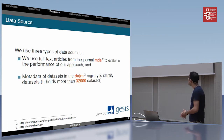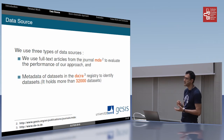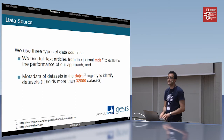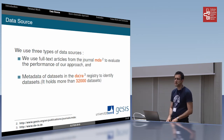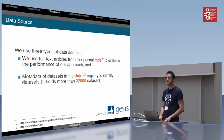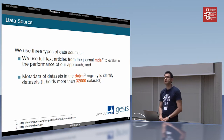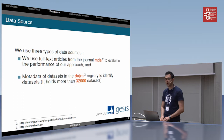We use two main data sources in our approach. The first is data for evaluating our approach, which is MDA journal papers — MDA is a journal related to the social science domain. The second source is metadata from the DARA repository, which we use for identifying dataset references in full text papers. DARA is a registry for economic and social science entities containing different types of data such as text, video, and datasets. For example, it contains more than 32,000 datasets.